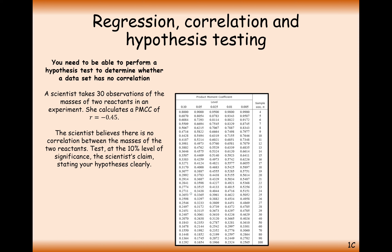For a quick example: with 10 data points at a 5% significance level, the product moment correlation coefficient has to be above 0.5494, or below minus 0.5494 on the negative side if you have a negative correlation.